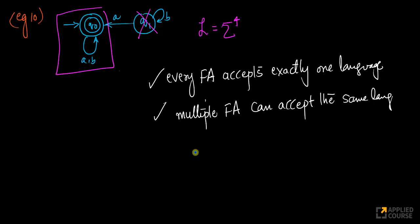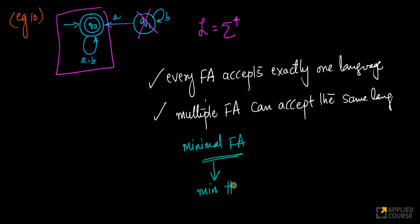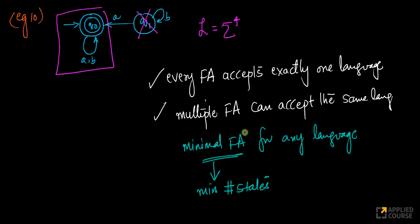The only thing that is unique is the concept called minimal finite automaton — a finite automaton with the minimum number of states. The minimal finite automaton for any language is unique.